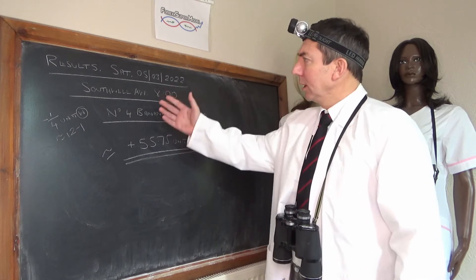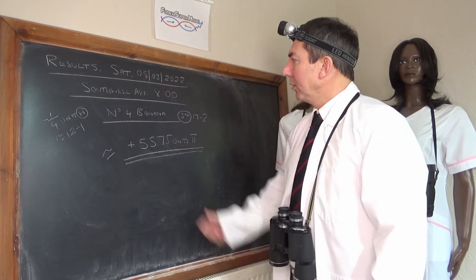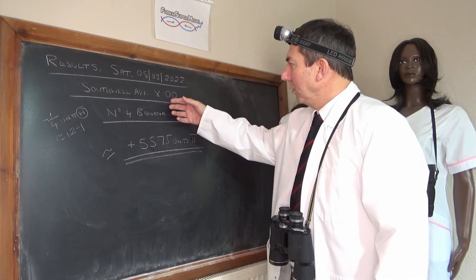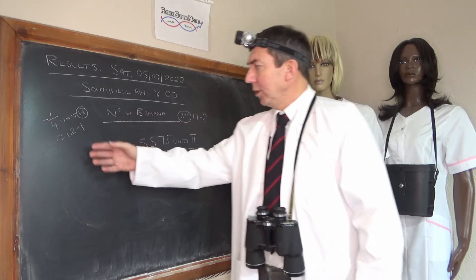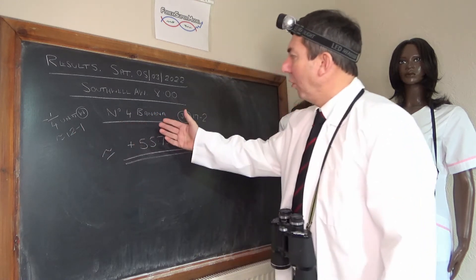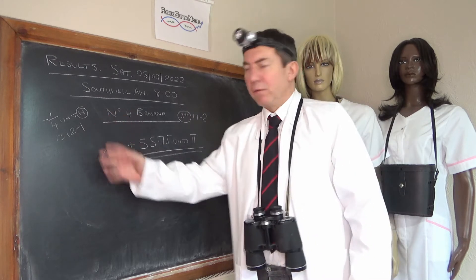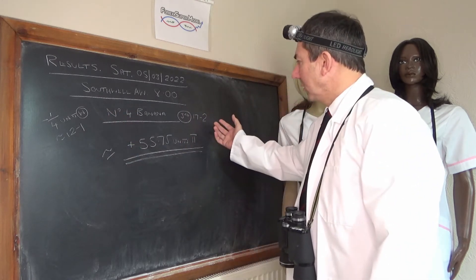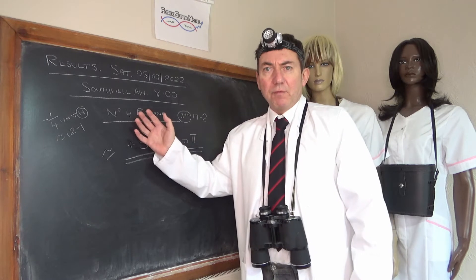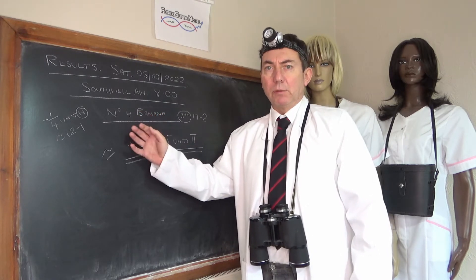Quick look at yesterday's results then, Saturday the 5th. We're at Southwell on the all-weather at 8 o'clock, we had a quarter of a unit win on number 4, Banana, 12 to 1 roughly on average. Came third at 17 to 2, led and then burnt out basically, so it was worth a go.